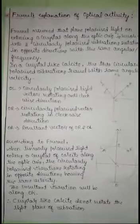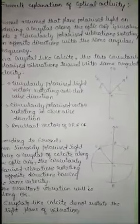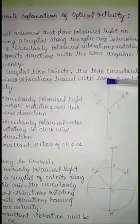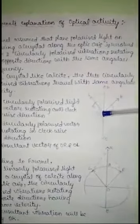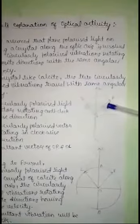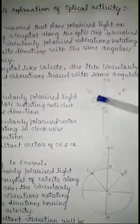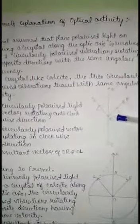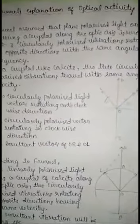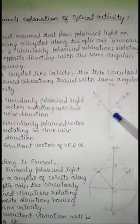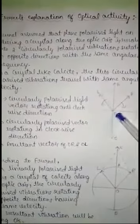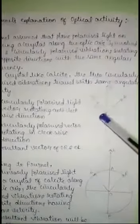Fresnel's explanation of optical activity. Fresnel assumed that when a plane polarized light enters the crystal along the optic axis, it is resolved into two circularly polarized vibrations rotating in opposite directions — one clockwise and another anticlockwise — with the same frequency. In a crystal like calcite, these two circularly polarized vibrations travel with the same angular velocity.